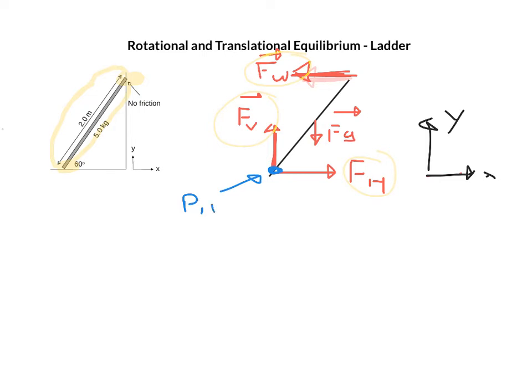If you think about it, if the wall would not be here, my ladder would actually rotate and fall around this point. Most likely I will need to calculate torques so let's look at my angles. If this one here is 60 degrees that means this one here must be 30 degrees and that means this one here is also 60 degrees.